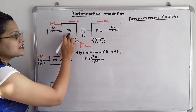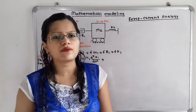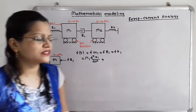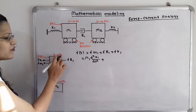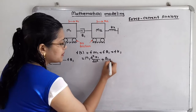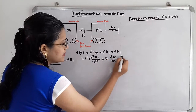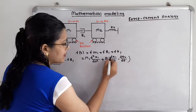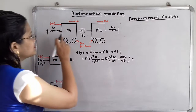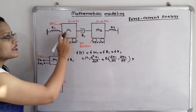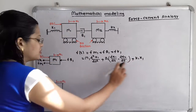For the damper, it is connected between M1 and M2, so we have to take the difference of displacements. Since this is the free body diagram of M1, we take X1 first. So the damper term is B1(dX1/dt − dX2/dt). For spring K1, since it is attached only to M1, we write K1·X1. So the complete differential equation for M1 is: F(t) = M1 d²X1/dt² + B1(dX1/dt − dX2/dt) + K1·X1.